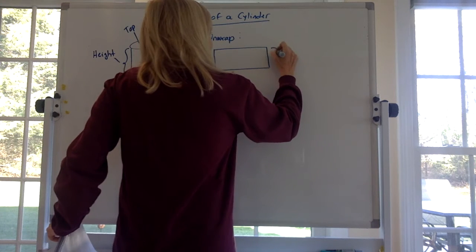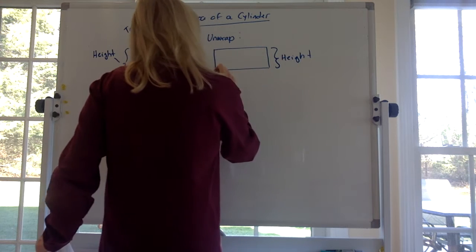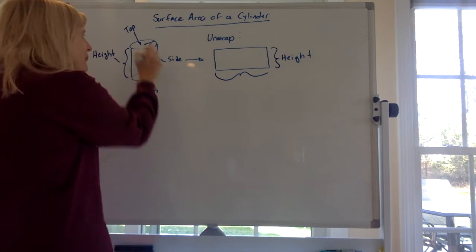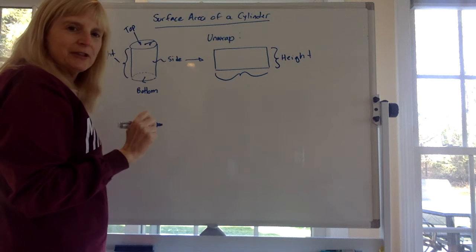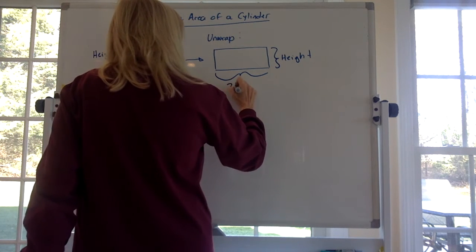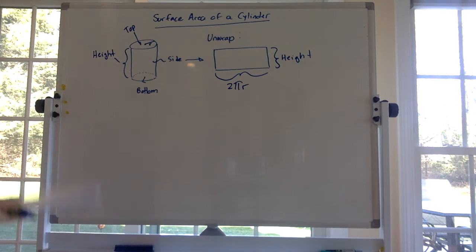And what are the dimensions of the rectangle? This is that height, how tall the can was. What is this dimension here? That's actually the circumference of the top, the circles at the top and the bottom. So what's the formula for circumference? It's 2πr.